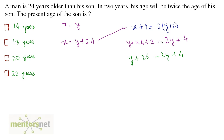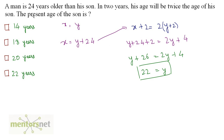y goes to the right, 4 comes to the left. So we get 26 minus 4 is 22 is equal to 2y minus y, which is y. So y's value is 22. Therefore the present age of the son is 22 years.